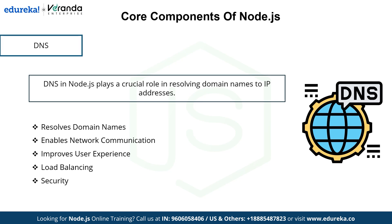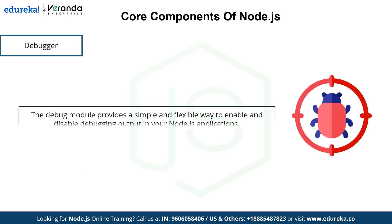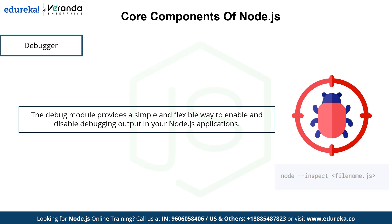The next component is the debugger. The debug module provides a simple and flexible way to enable and disable debugging output in Node.js applications. Just start your app with 'node inspect filename' and use commands like 'n' to step or 'c' to continue execution.